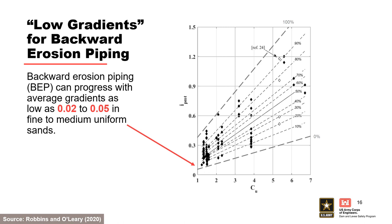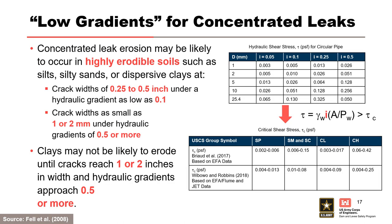Don't just provide the numerical value of gradient — this assists with quality control reviews and helps to clearly communicate seepage path length. Discuss key assumptions and parameters for estimation of critical gradients. You cannot just discuss gradient for concentrated leak erosion; gradient must be discussed in the context of erodibility, along with assumed dimensions. Concentrated leak erosion may be likely to occur in highly erodible soils such as silts, silty sands, or dispersive clays at crack widths of 0.25 to 0.5 inch under a hydraulic gradient as low as 0.1, or crack widths as small as 1 or 2 millimeters under hydraulic gradients of 0.5 or more.